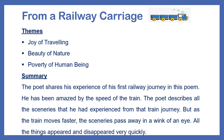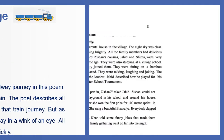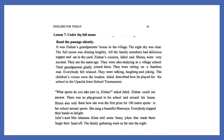Now we will move on to our next lesson — Lesson 7. Here we get the rest of the story of Jishan and Julie. It was Jishan's grandparents' house in the village. The night sky was clear and the full moon was shining brightly. All the family members had a delicious supper and sat in the yard. Jishan's cousins Jahid and Shima were very excited — they are the same age and studying at a village school.